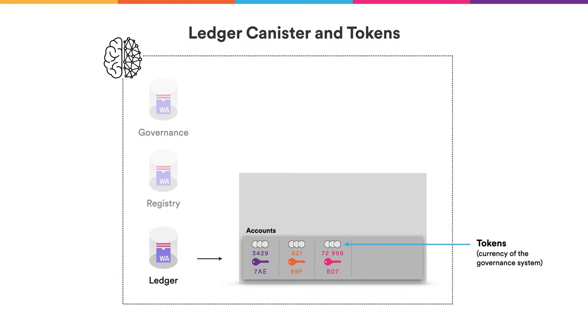Next we will look in more detail what the canisters on the NNS store and how they work. First, as a prerequisite to understand what neurons are, we will now look at tokens, which are the currency of the governance system. Tokens are managed by yet another canister on the NNS, the so-called ledger canister, and the ledger canister stores two things: first, it stores accounts, and then it stores transactions. An account record keeps track of how many tokens are in the possession of a given principal and it also denotes an account address.